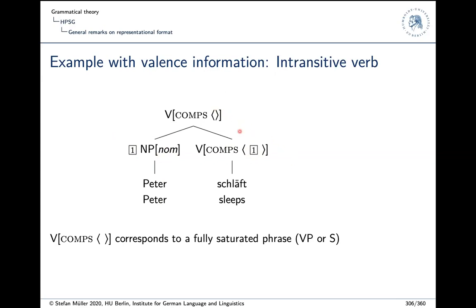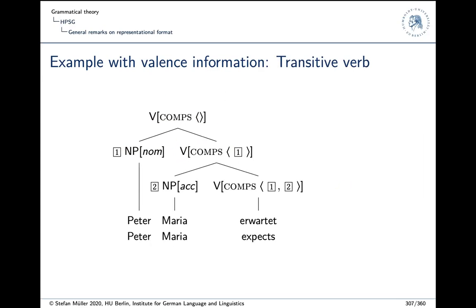In the tree for Peter schläft, Peter selects an NP in the nominative. The description in the comps list is identified with the sister in the tree. Peter has certain properties — it's a proper name, syntactically complete — and is more specific than what we're looking for, but compatible with it. The valence list gets shorter: once we've found Peter we don't need anything anymore, giving an empty comps list — a complete verbal projection. For a transitive verb like Peter Maria erwartet, there are two elements in the comps list; combining takes them off one by one until we get a complete projection. These trees are just abbreviations — it's all feature value pairs.